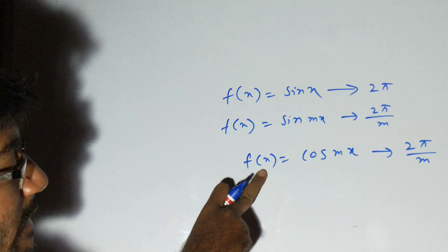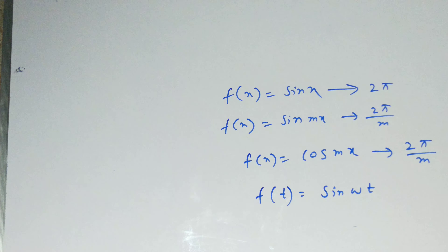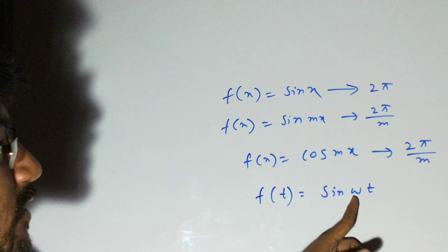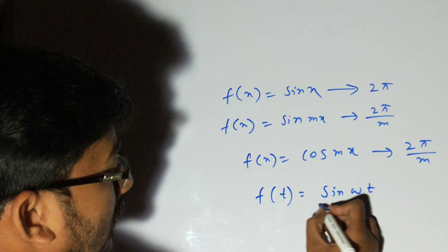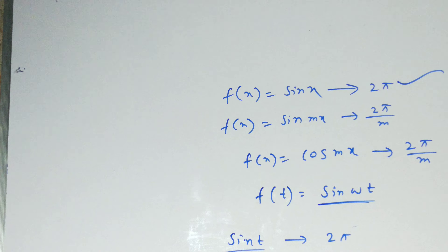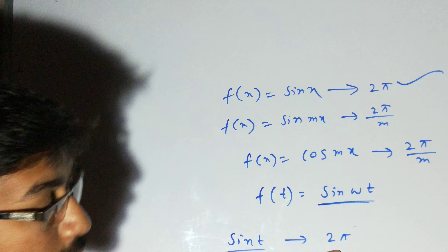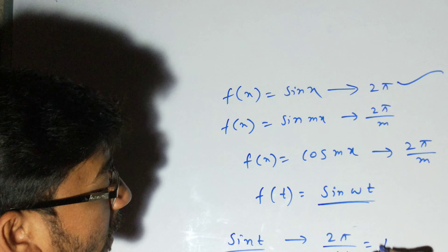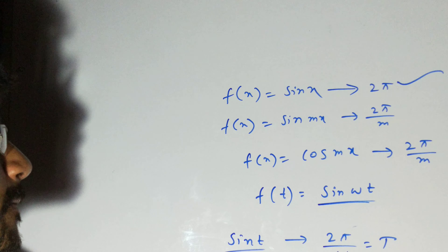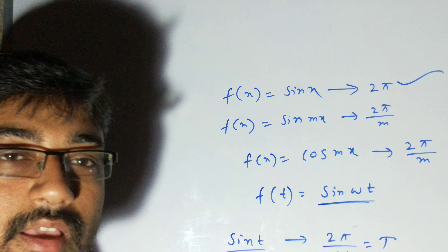Similarly, if we use the function of t, like f(t) = sin(ωt), the variable is t and the constant is ω. The period of sin t is 2π, so the period of sin(ωt) is 2π/ω. Likewise, the period of cos(ωt) is also 2π/ω. Please remember this trick, as it is important for understanding periodic motion and simple harmonic motion. Next class, we will discuss simple harmonic motion in detail.